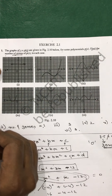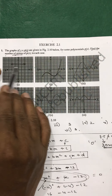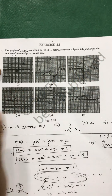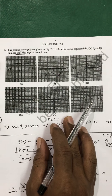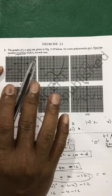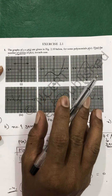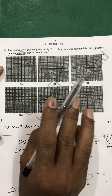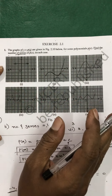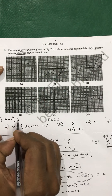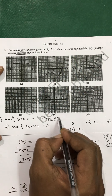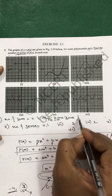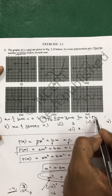I left question number 1 because that graph is not cutting the x-axis at any point. Since it is not cutting the x-axis anywhere, this graph will not have a zero. It will not have a zero, solution, or root — zero, root, and solution all mean the same thing. Therefore, there is no zero for y equal to p of x in this case.